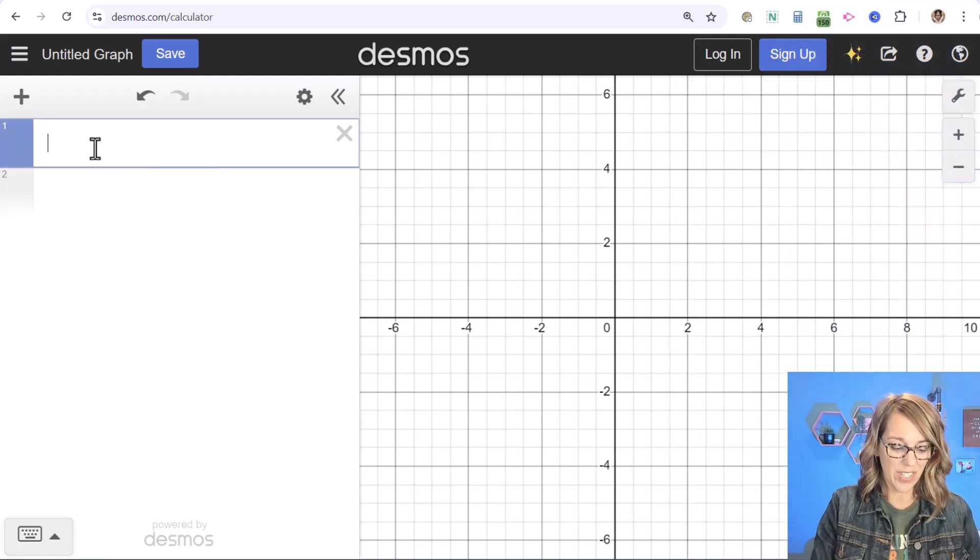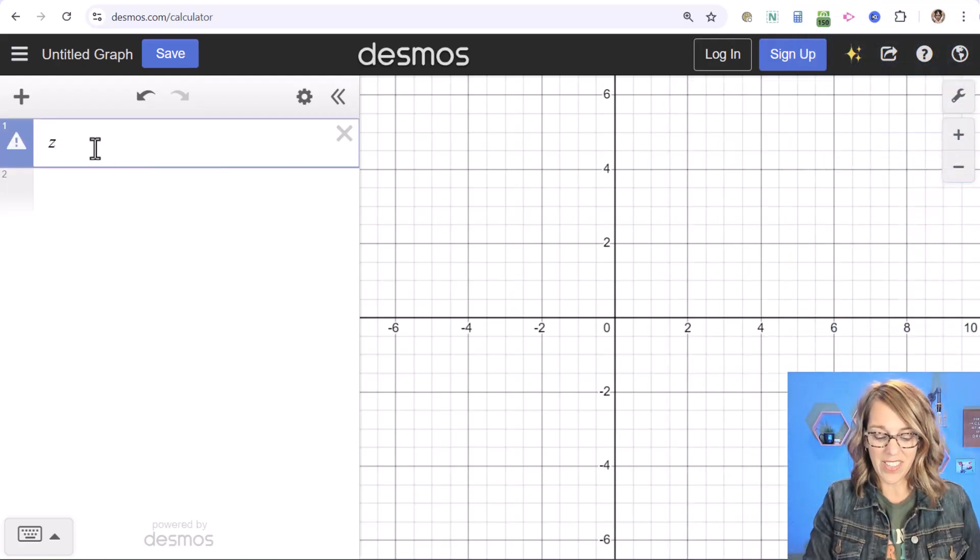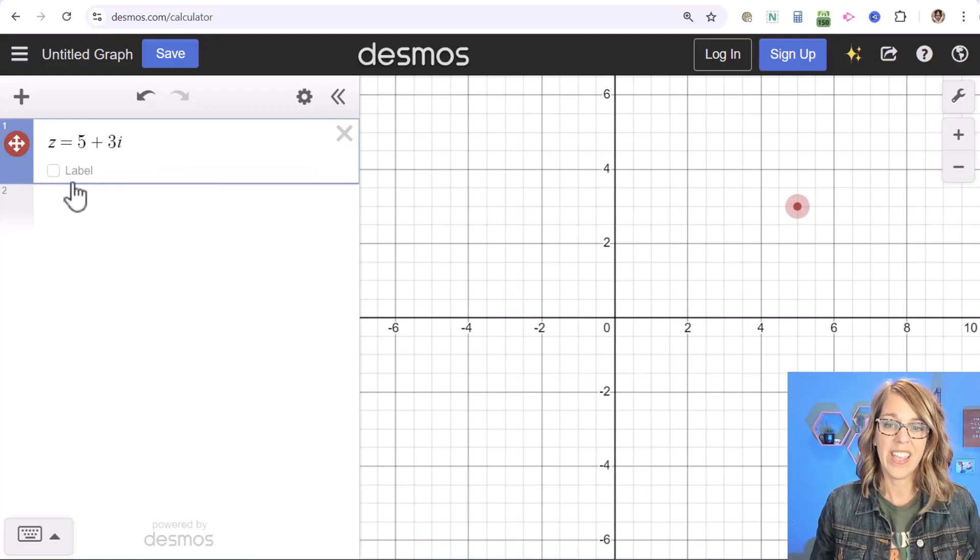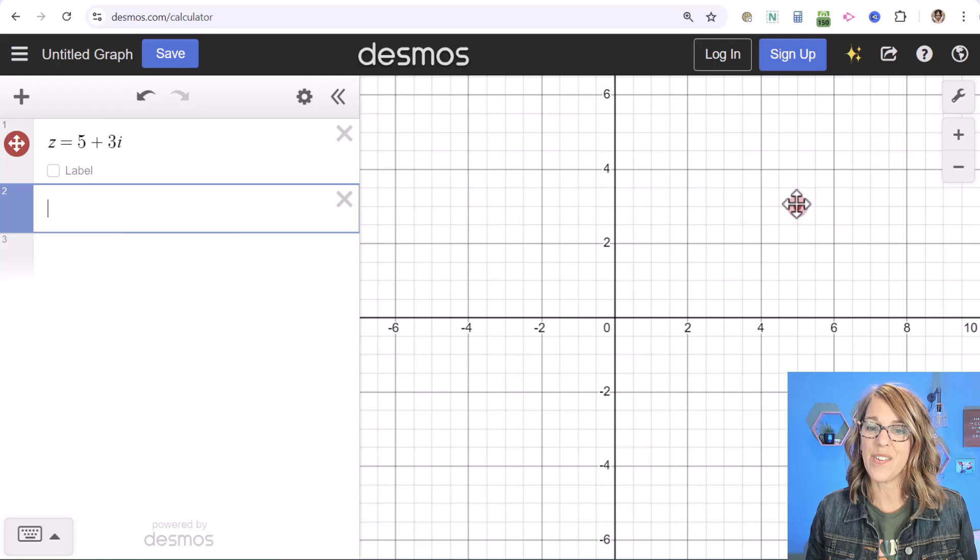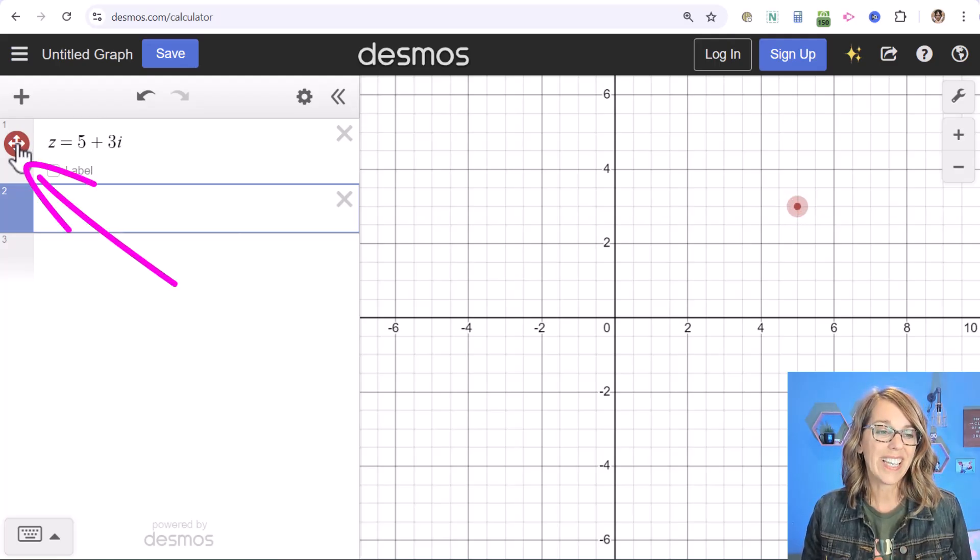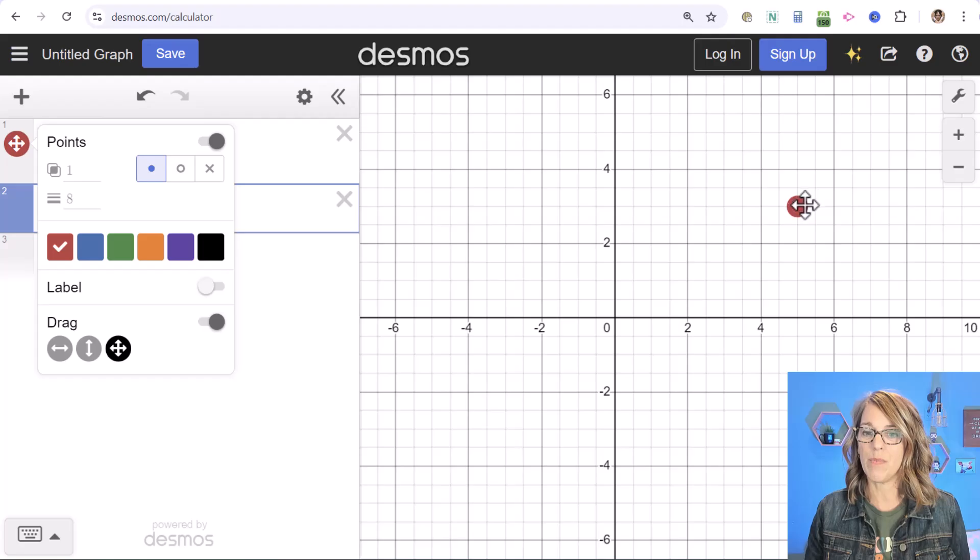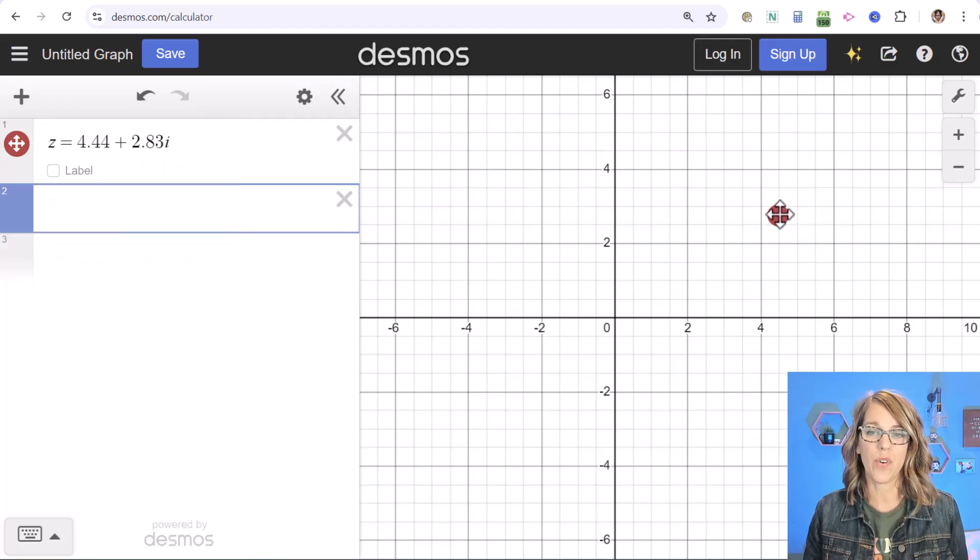Now here we can actually define values. So I can say that z is equal to 5 plus 3i. And once I've got that defined, notice that this point over here shows up. If I click and hold on the point I get some options. I have drag on which means that I can move this around. Watch how the coordinates change as I move this.